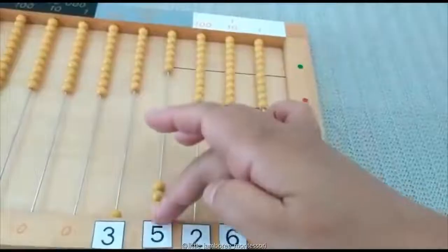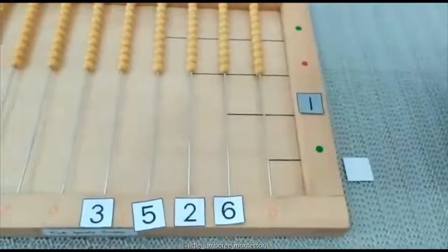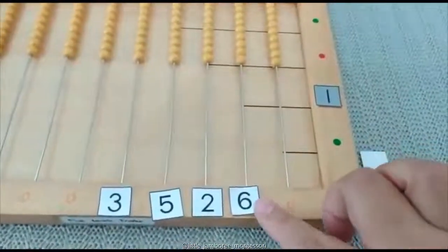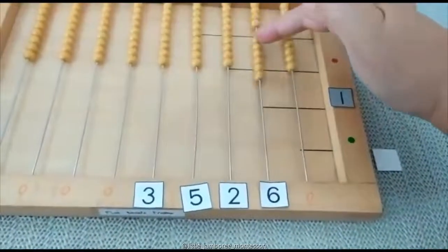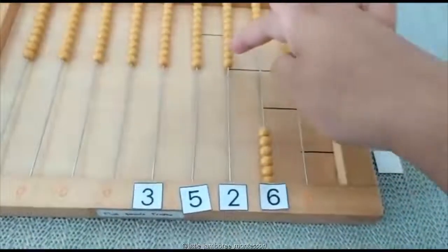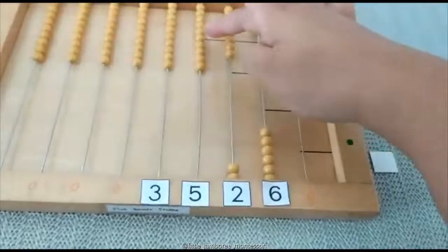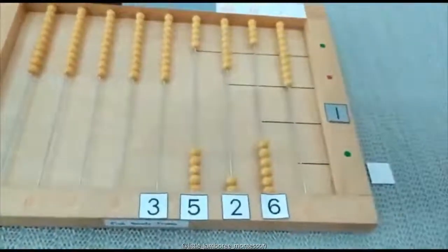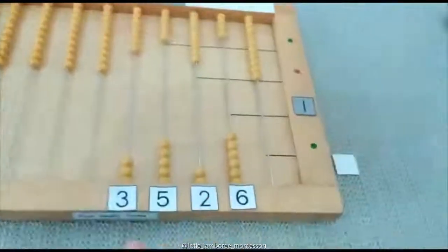Start again. Zero, zero. Six tens multiplied by one ten equals six. Two multiplied by one equals two. Five times one is five, and three multiply by one is three. So the answer is...